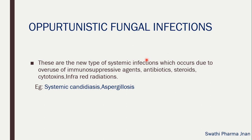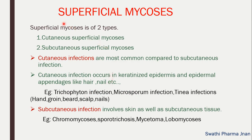Examples of opportunistic fungal infections are systemic candidiasis and aspergillosis. The next category is superficial mycosis, which is again classified into two types: cutaneous superficial mycosis and subcutaneous superficial mycosis. Cutaneous mycosis infections are most common and occur in the keratinized epidermis and epidermal appendages like hair and nails. Examples under cutaneous mycosis are Trichophyton infection, Microsporum infection, and tinea infections.